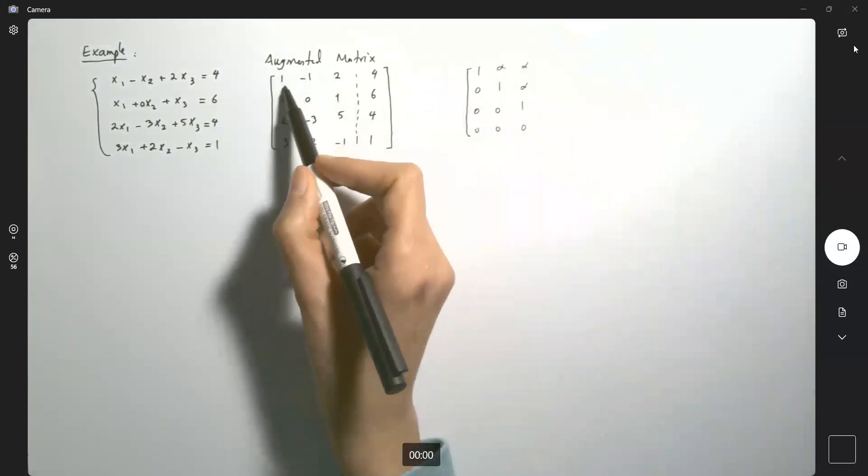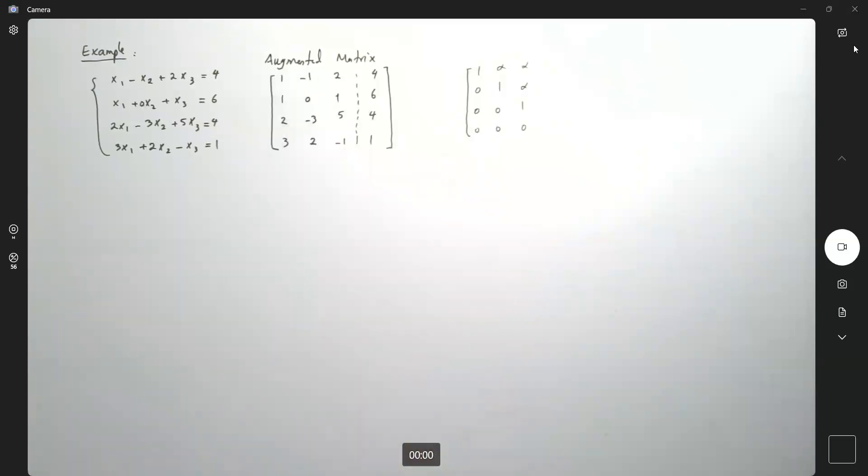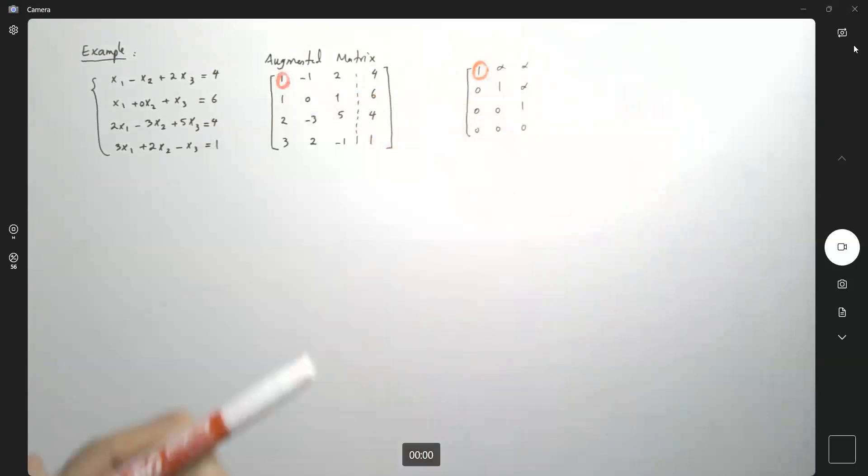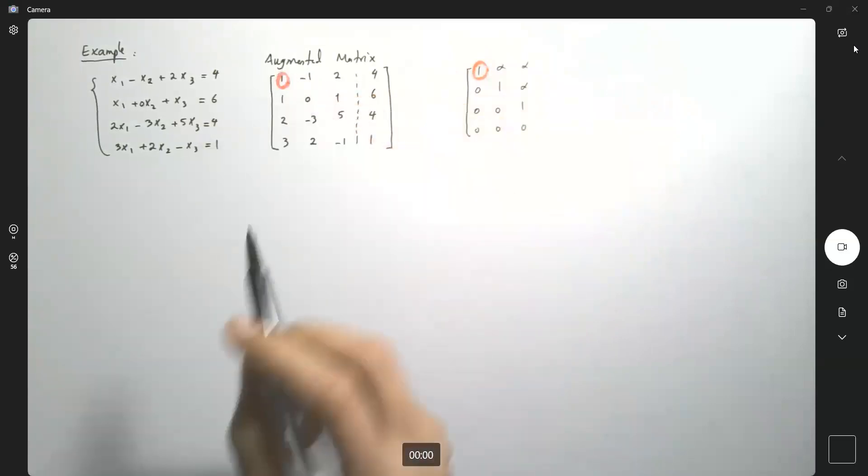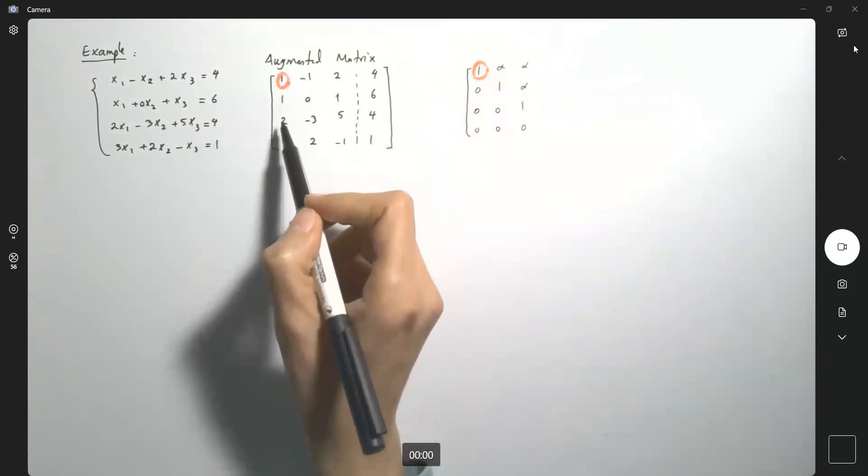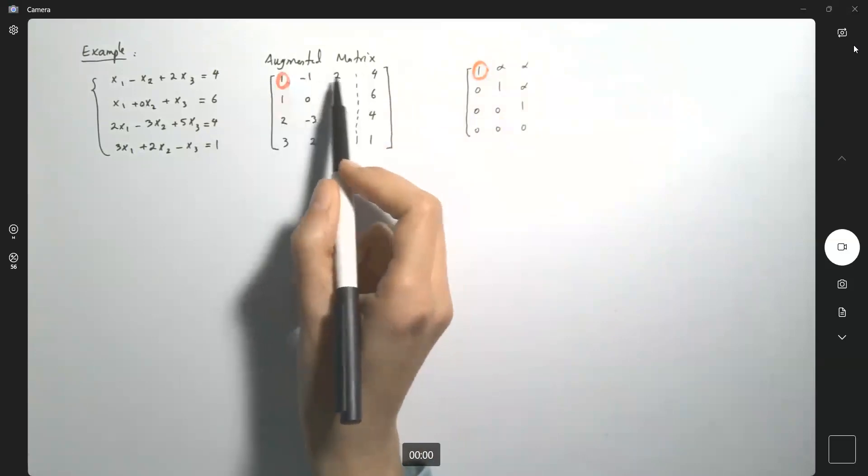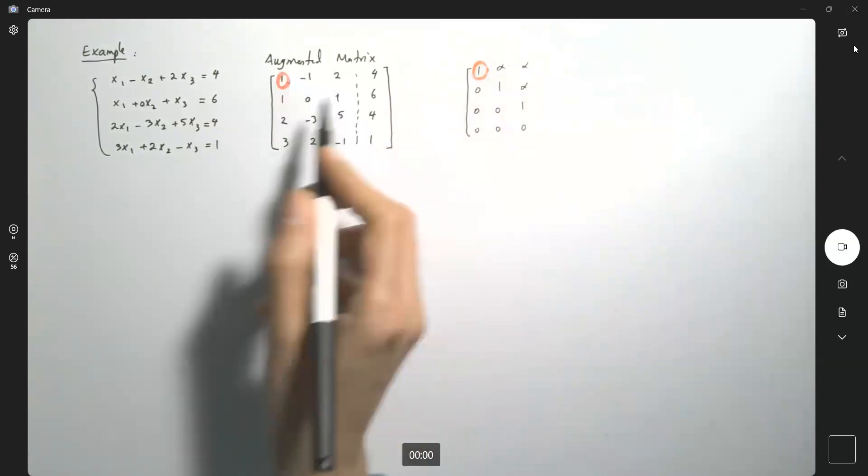Luckily for us, the leading coefficient on the first row is one. This is one, and we have one here. Note that below one, we need to have zero, zero, and zero. So what are we going to do? We can multiply the first row by negative one and add it to the second row.